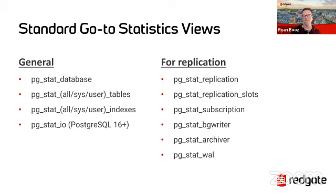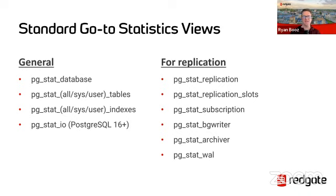The standard go-to views you'll see referenced almost anywhere for introspecting into Postgres include: stat_database, which gives a high-level overview of things happening in the database — there's a row for every database with various columns about size, number of connections, and so on. Then you have pgstat tables, and remember there are three different views for each: all is everything — system and user tables — then sys and then user.